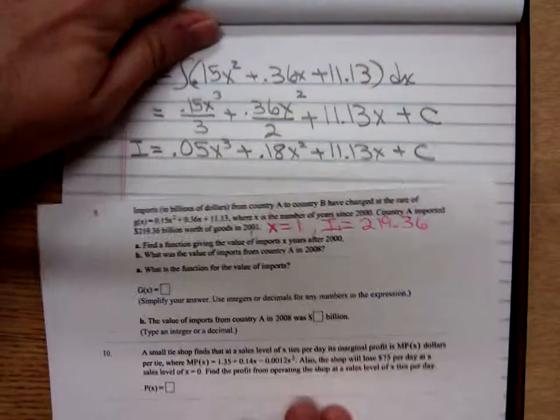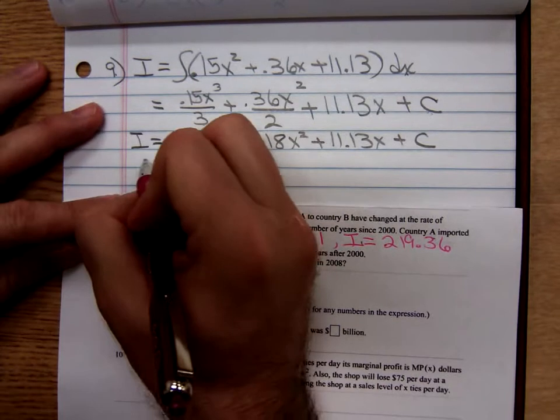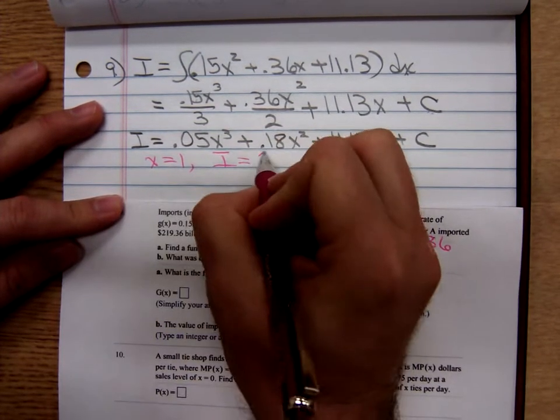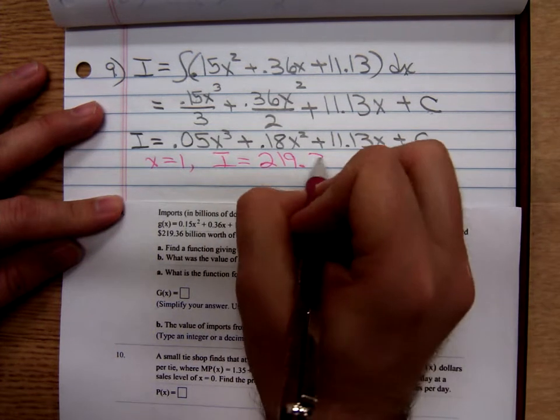So x is 1 and our imports are 219.36 billion. So coming down here, we're going to have to let x equal 1 and capital I equal 219.36.